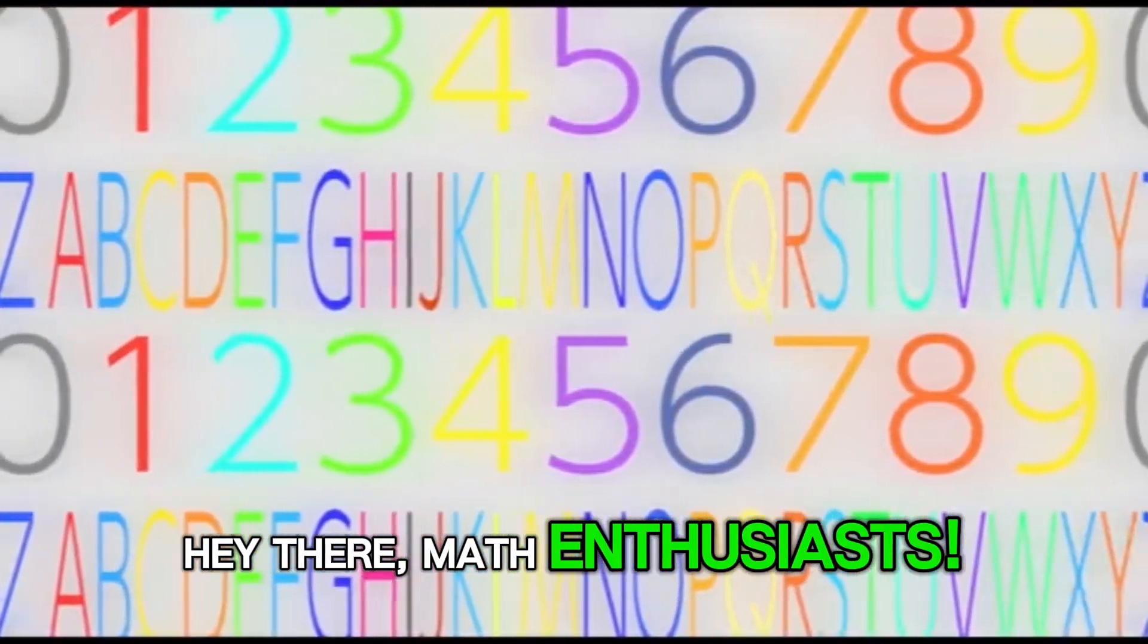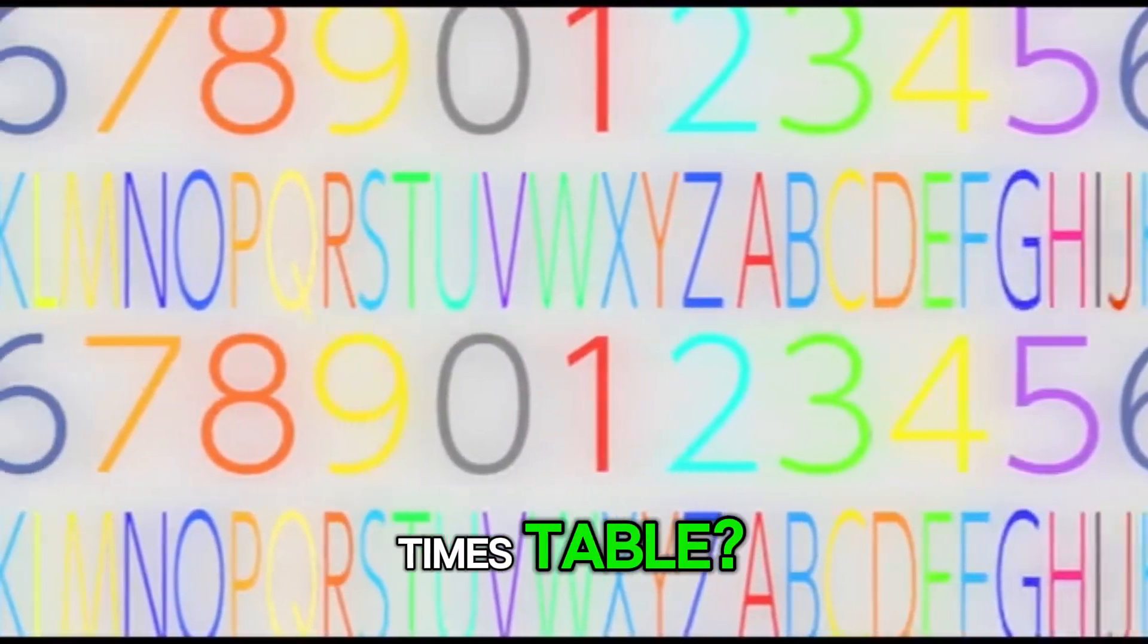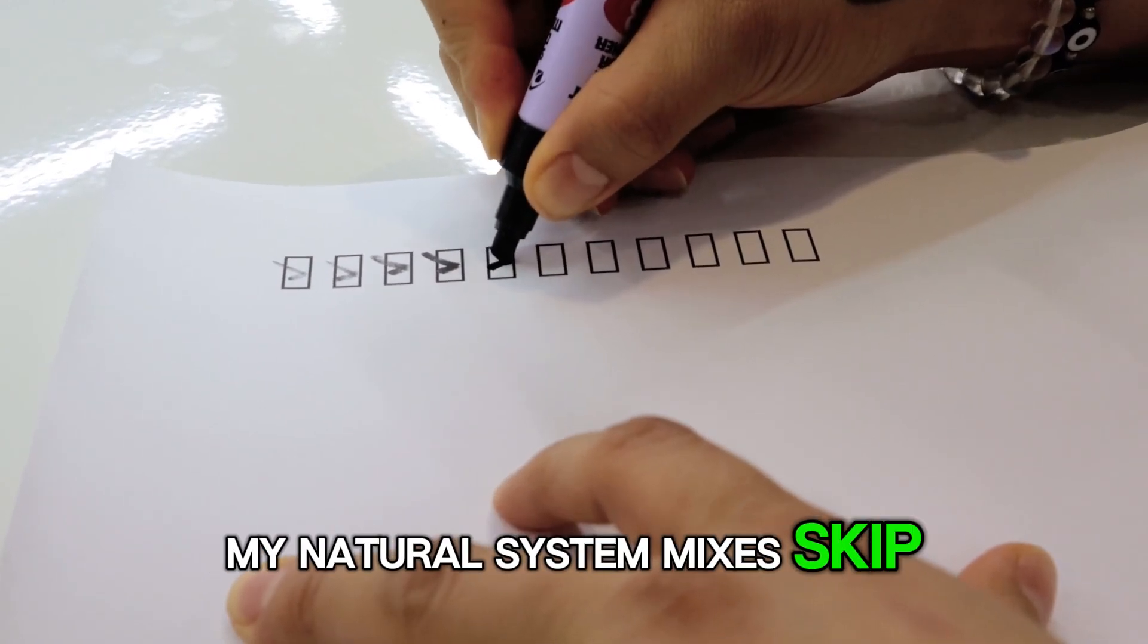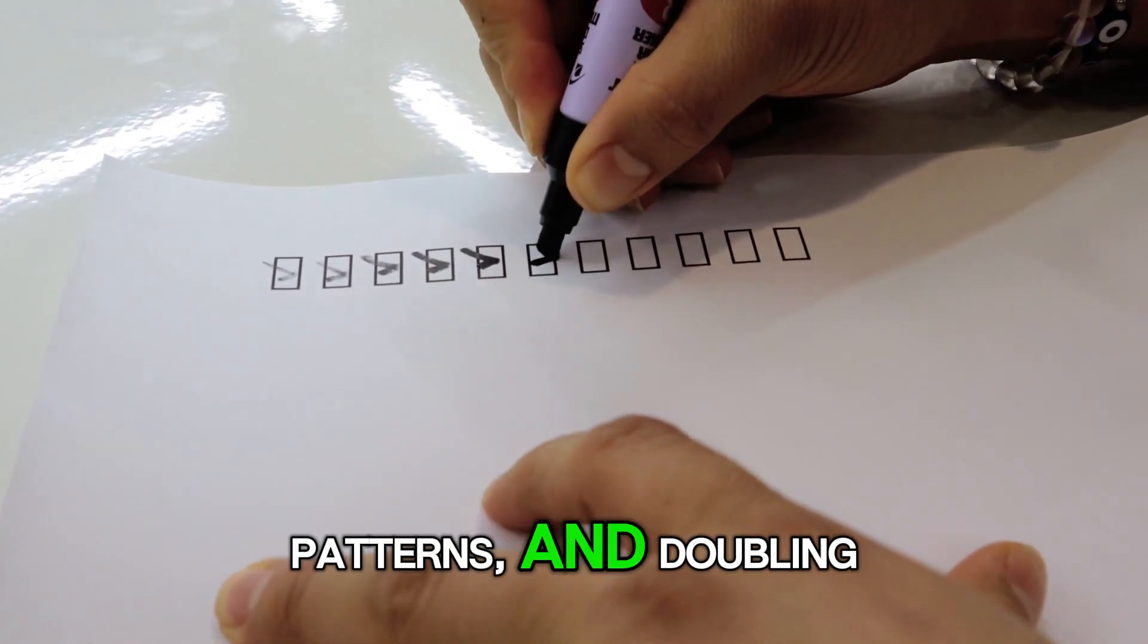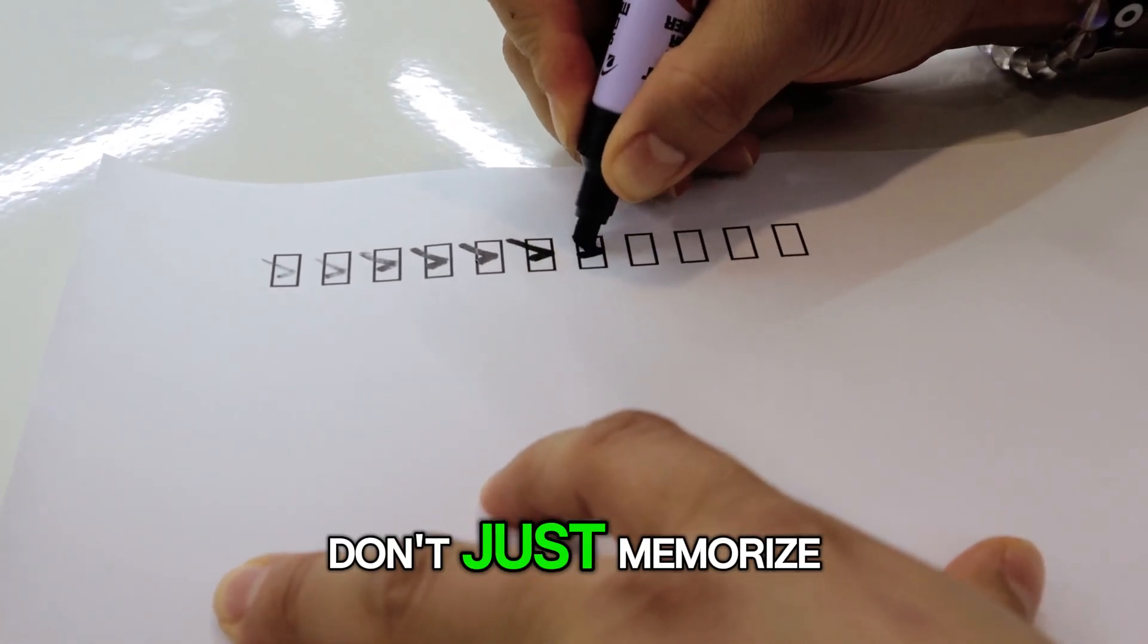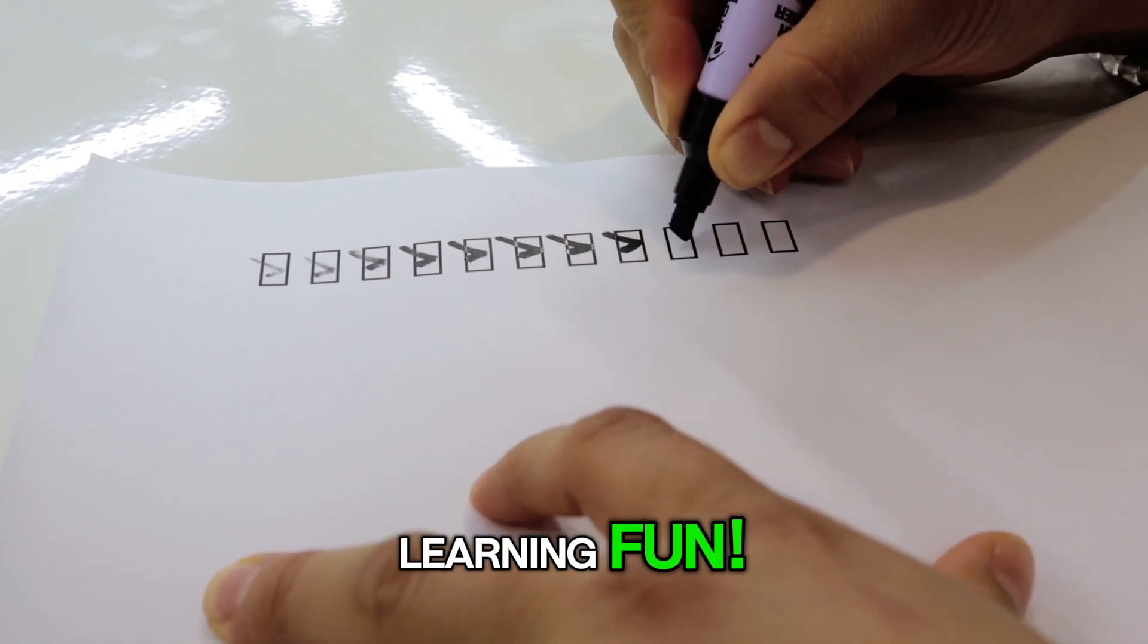Hey there, math enthusiasts! Ready to conquer the eight times table? My natural system uses skip counting, patterns, and doubling tricks so kids don't just memorize. Let's dive in and make learning fun!